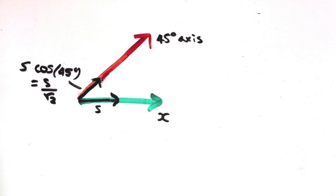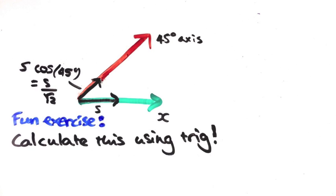We can calculate how strong we think it should be using vectors, and get that the new spin should be s on root 2. But what happens when we measure it?